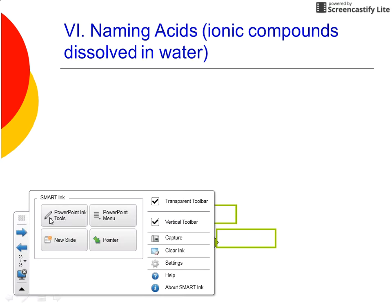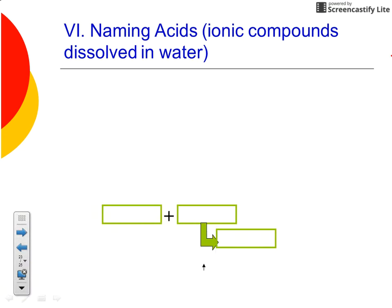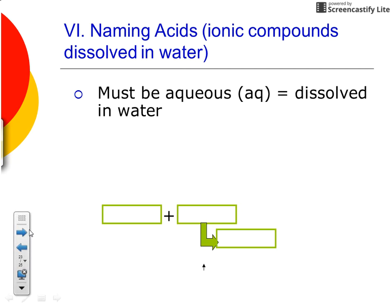Our lesson for today is on naming acids. Let's talk about exactly what an acid is. Acids are ionic compounds that have been dissolved in water. All acids will begin with a hydrogen - all acid formulas will begin with a hydrogen.